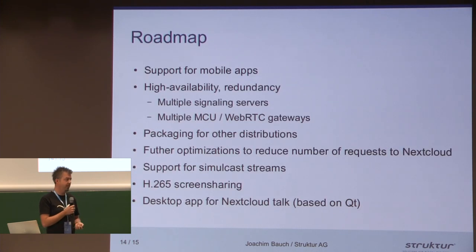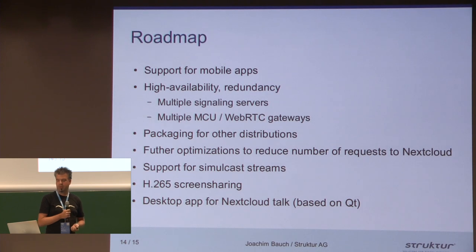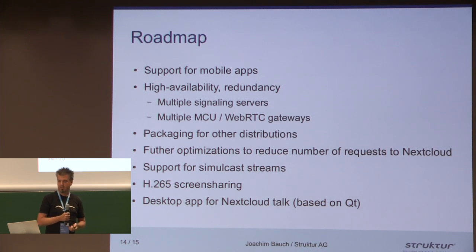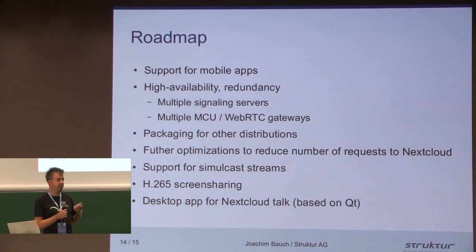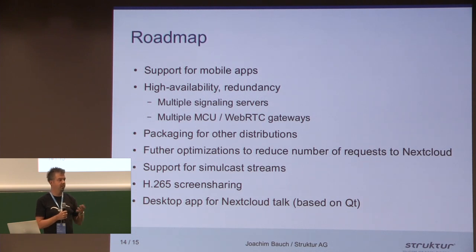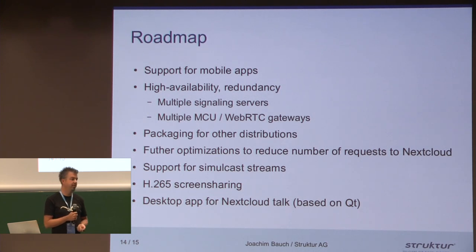On the roadmap, currently all that setup is not supported with the mobile apps, so this is something that needs to be worked on. We will also work on providing high availability support and redundancy, so you can have multiple signaling servers and gateways. We will package for other distributions besides Ubuntu, depending on customer demand, and further optimize everything. Also, we want to support simulcast streams, meaning that a client publishes his stream in different resolutions and with different bandwidths, and the gateway then selects the best stream for each client. We are also working on H.265 screen sharing to further reduce the bandwidth, and we are working on a desktop app for Nextcloud Talk built with Qt or native code.